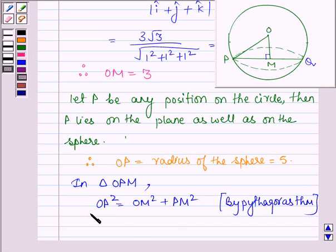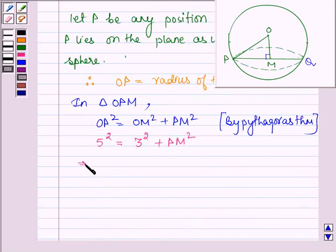Now let us substitute the values. OP is the radius of the circle which is 5 squared. OM is 3, so we have 3 squared plus PM squared.